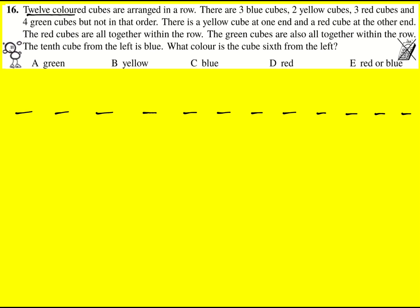And then we're told some information, how many we've got of each color. And then we're told that there's a yellow cube at one end and a red cube at the other end. However, it might be the other way around.